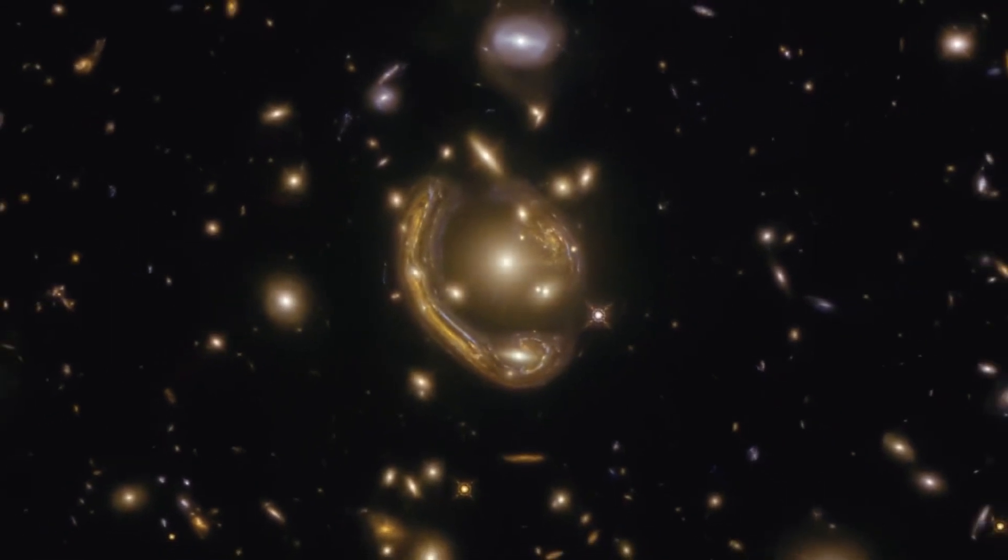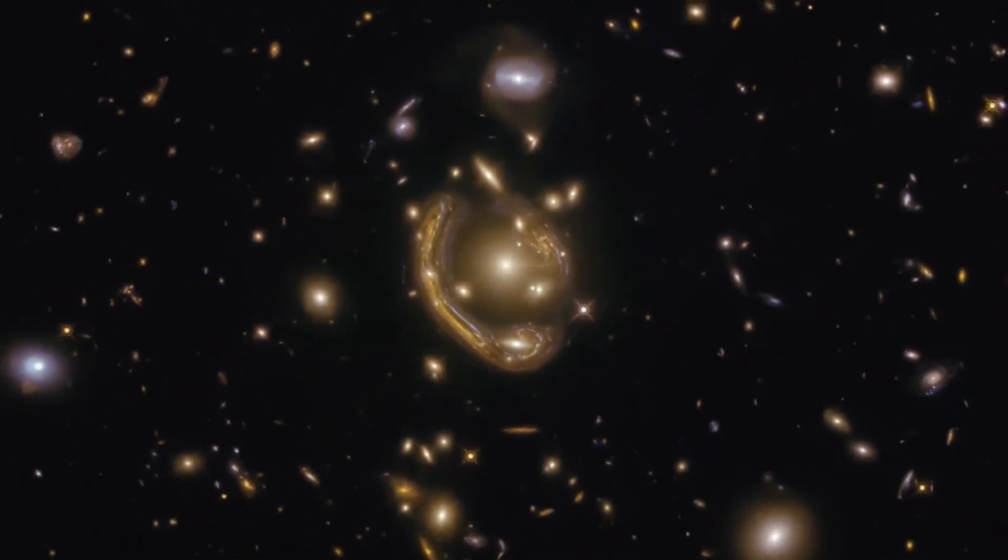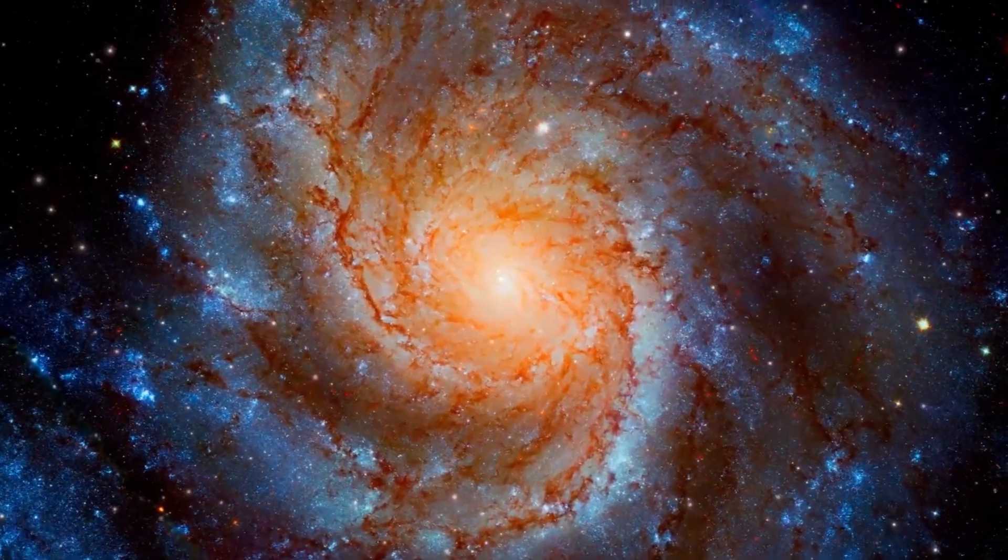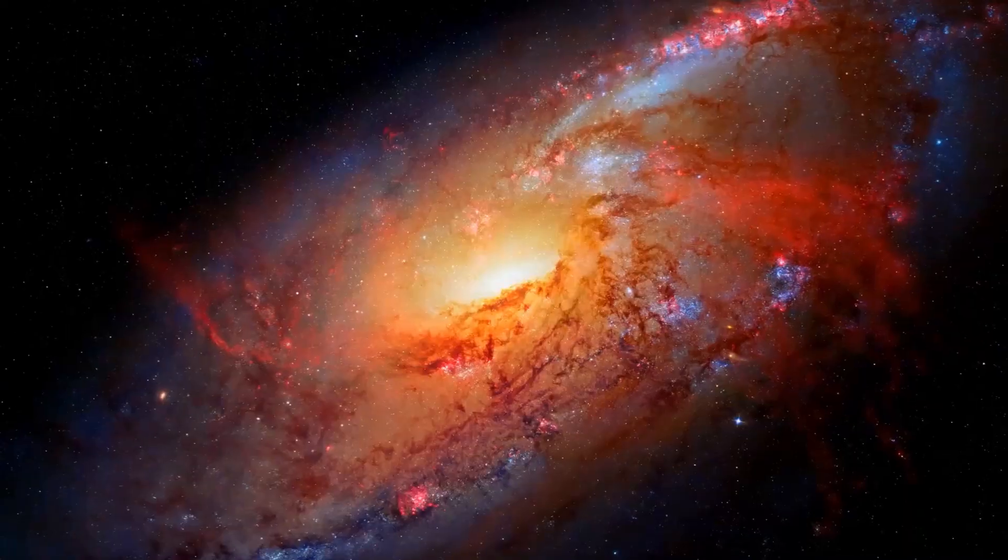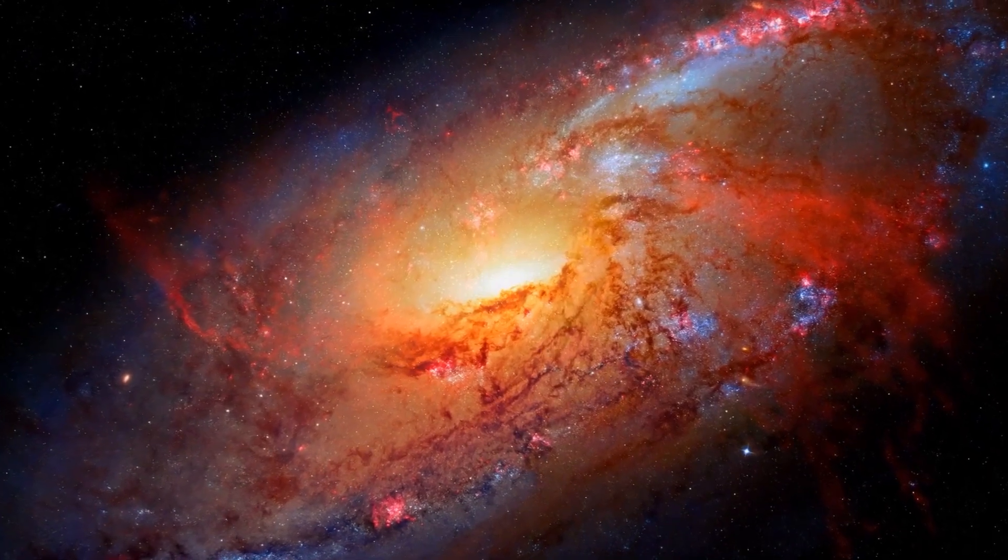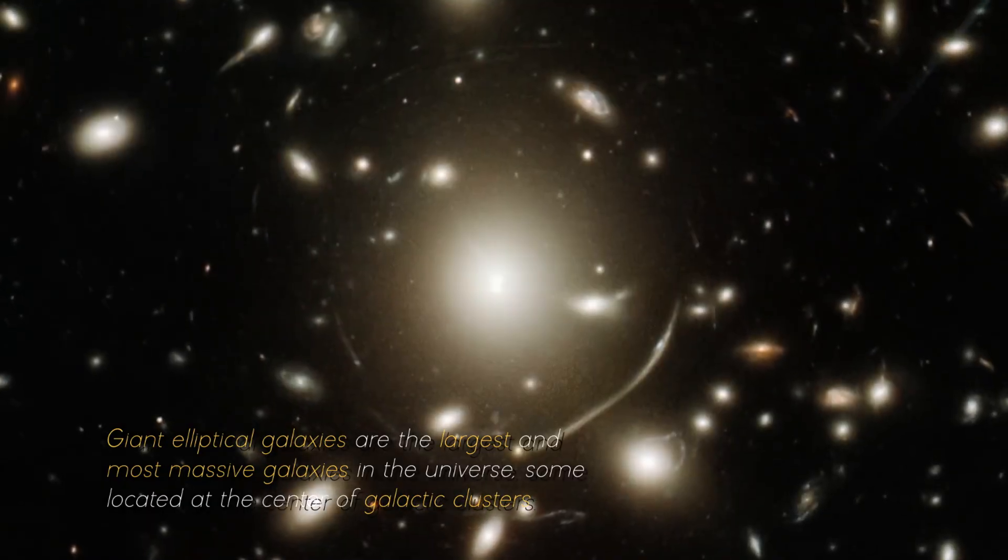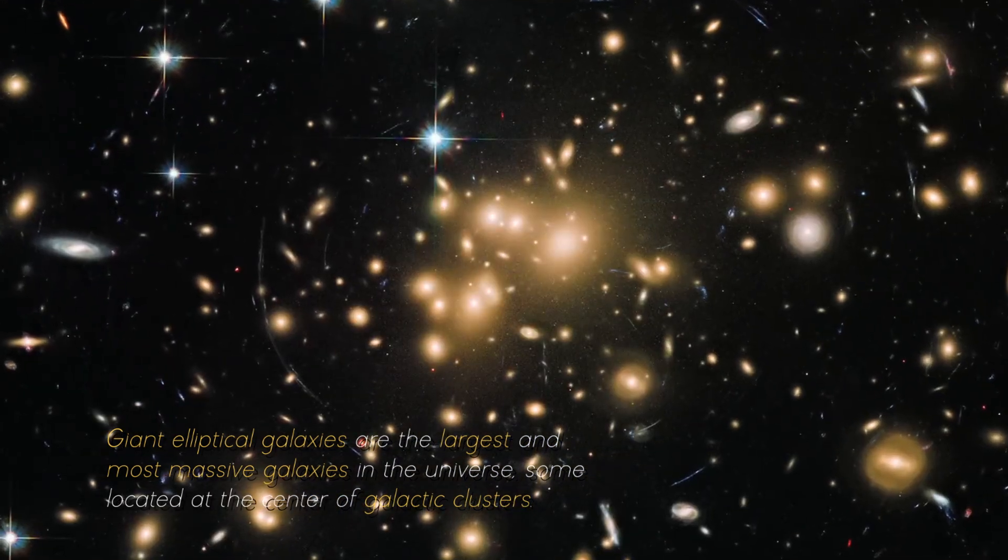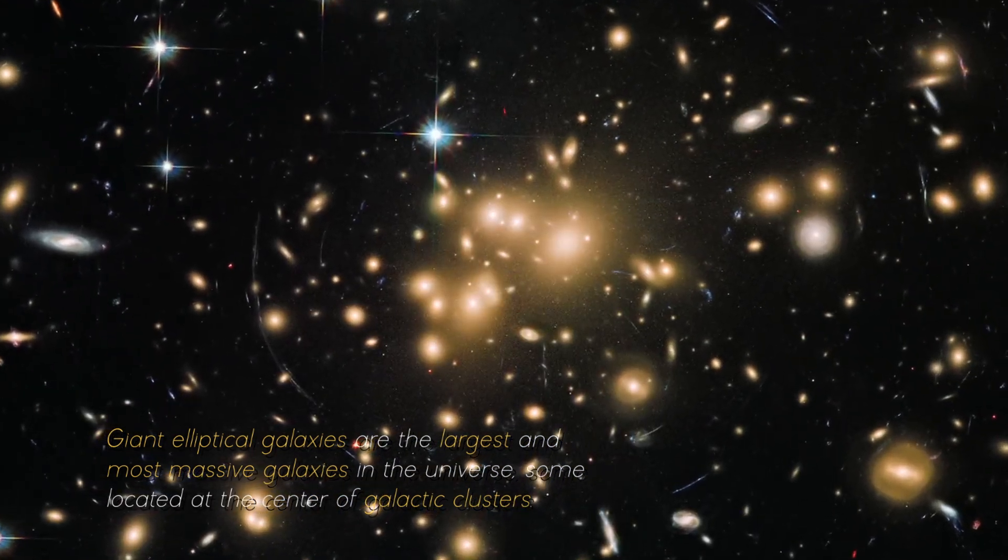The massive, compact, quiescent galaxy, or fossil galaxy, is a particular type of galaxy that has stopped forming new stars and is considered a possible precursor to the giant elliptical galaxies. Giant elliptical galaxies are the largest and most massive galaxies in the universe, some located in the center of galactic clusters.